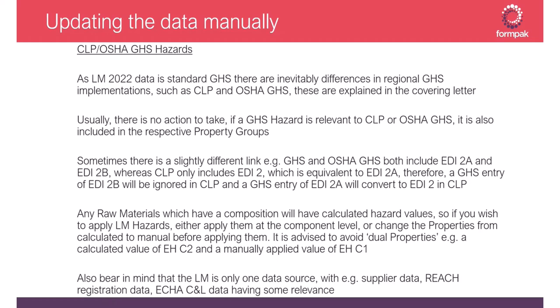If manually entering data from a CLP safety data sheet that says EDI 2, that means the GHS hazard EDI 2A, so it's still good practice to add EDI 2A in GHS even if the source data says something slightly different. Raw materials with a composition usually have their hazards calculated from those components, including natural complex substances. From sheet two of the labeling manual there are also hazards listed for NCS, so it's possible that hazards are both calculated from components and applied manually — where possible, it's good to avoid this.